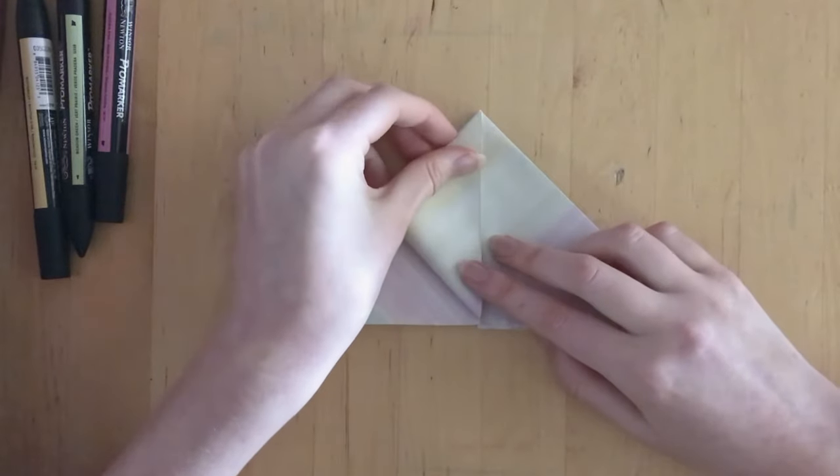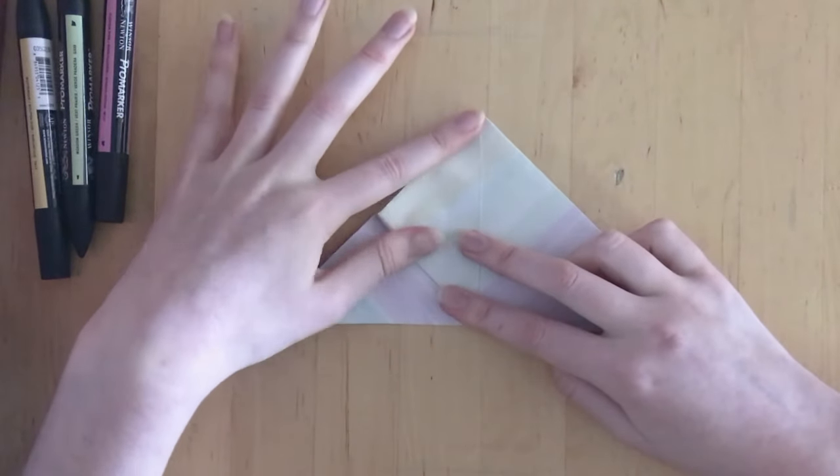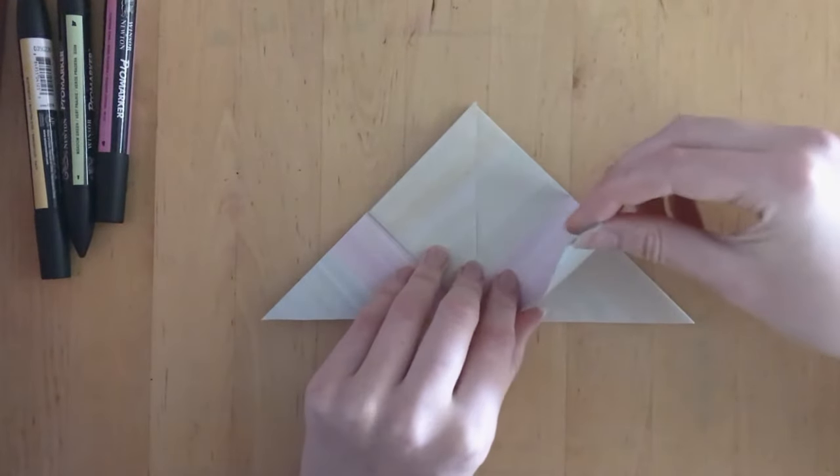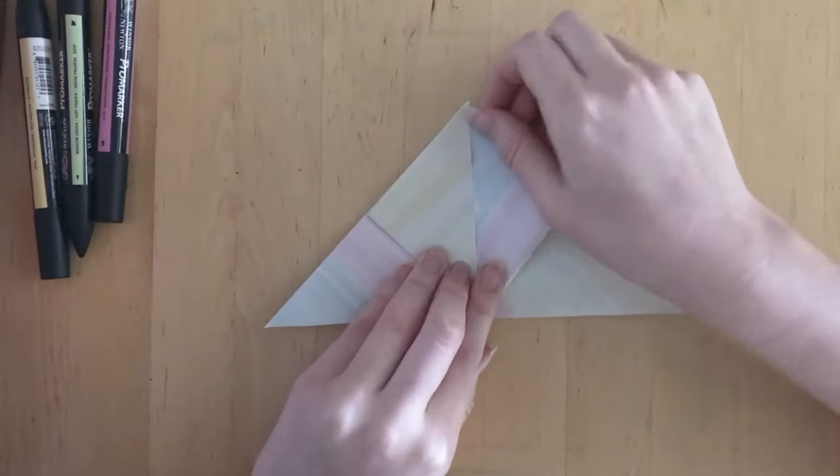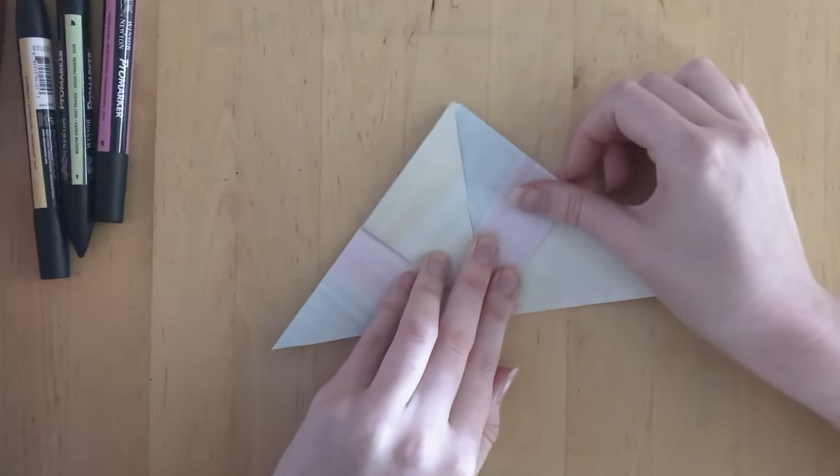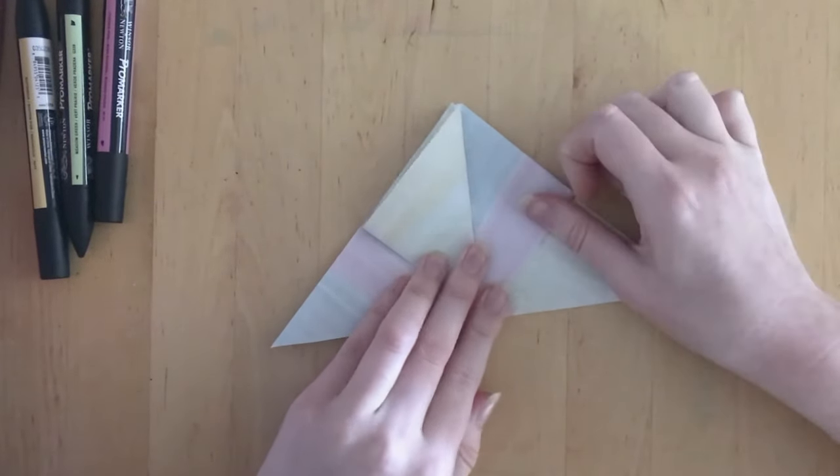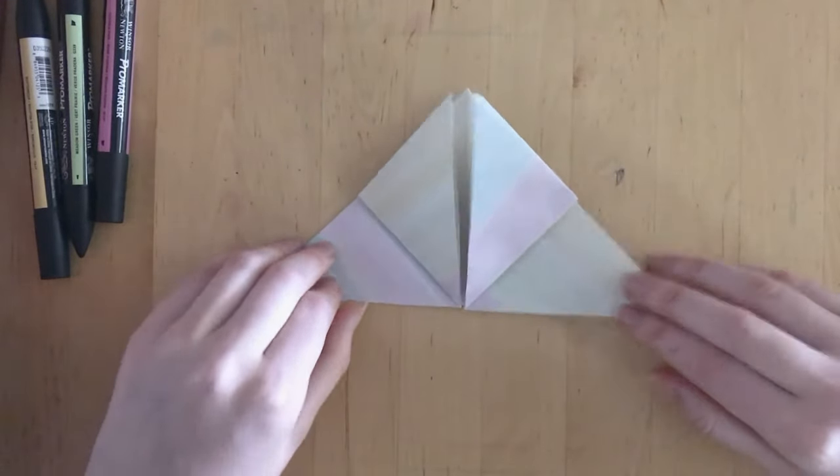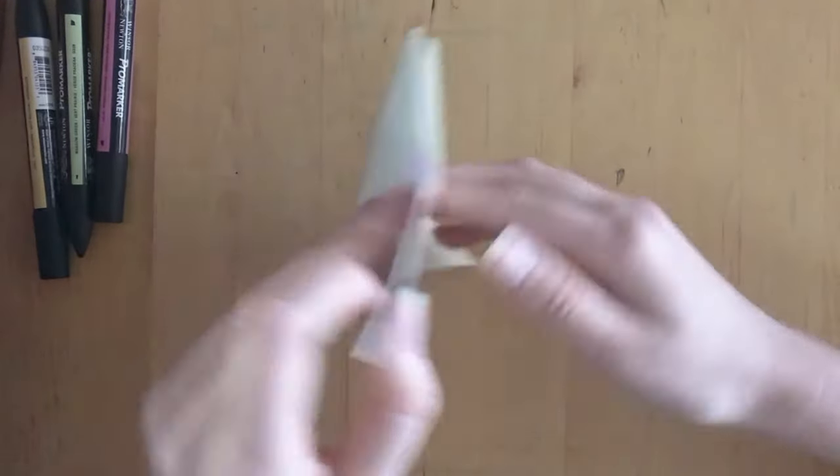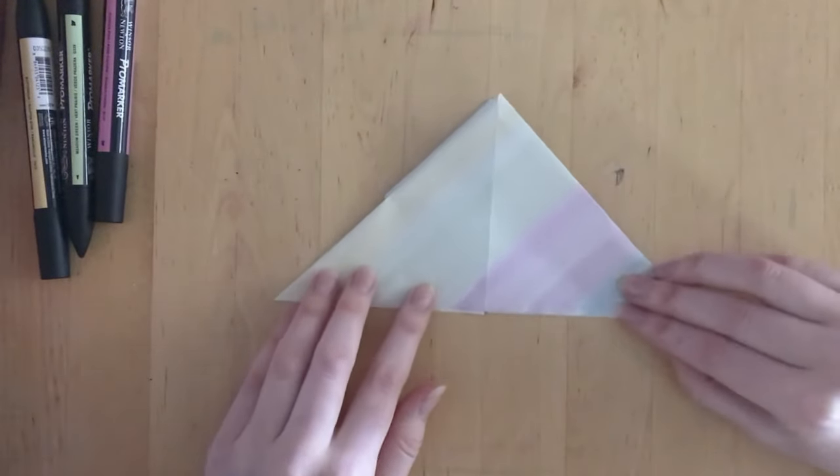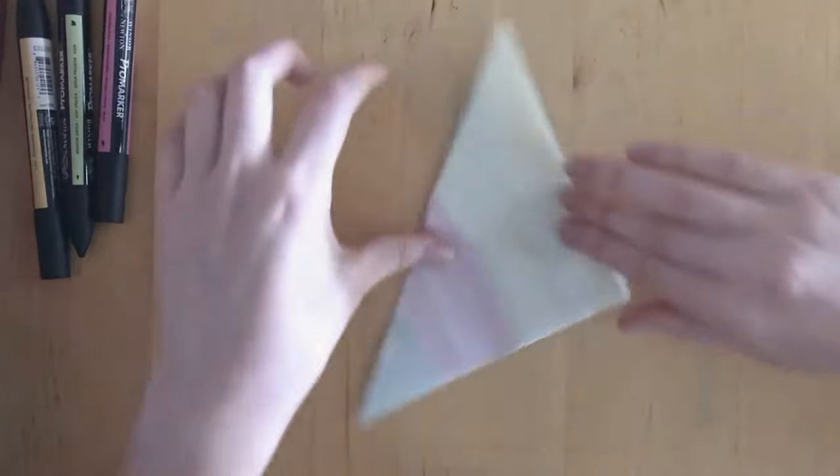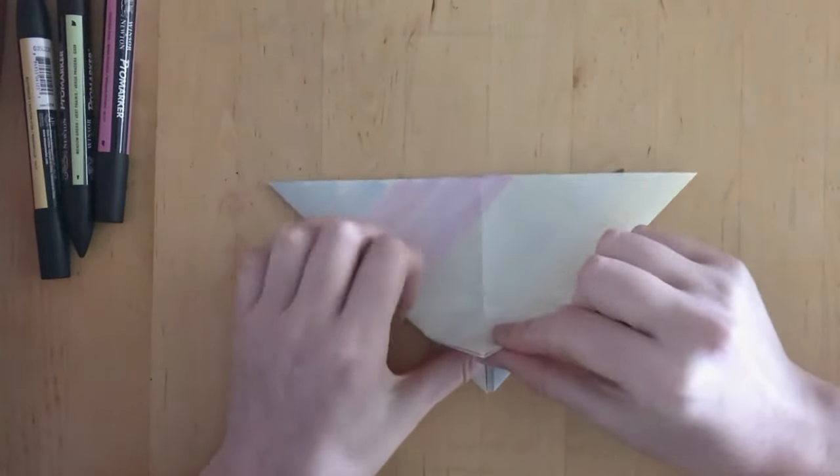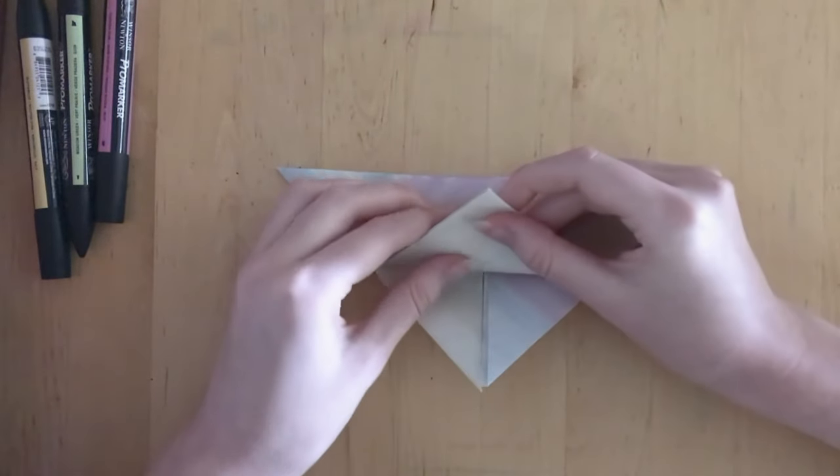I'm going to bring these edges in to make a diamond. Perfect, so you have a diamond on top of your triangle. Now we're going to flip it over.